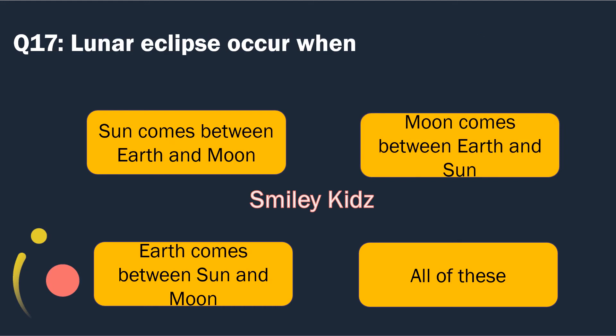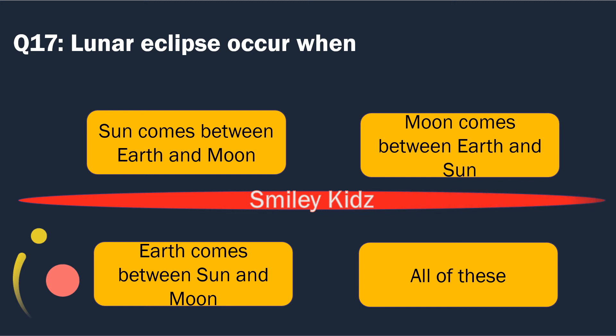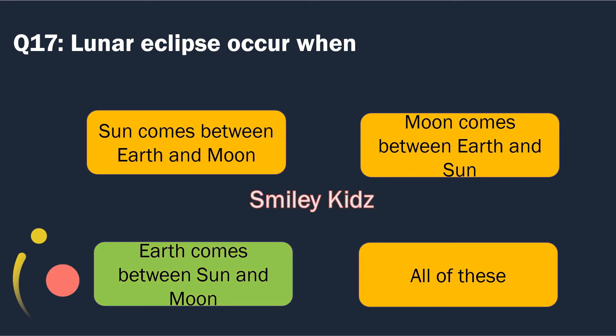Question number 17. Lunar eclipse occurs when. Options are: Sun comes between Earth and Moon; Moon comes between Earth and Sun; Earth comes between Sun and Moon; and All of these. The right answer is Earth comes between Sun and Moon. Lunar eclipse occurs when Earth comes between Sun and Moon.